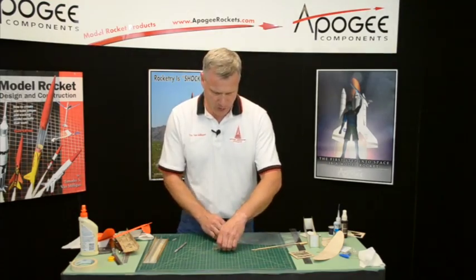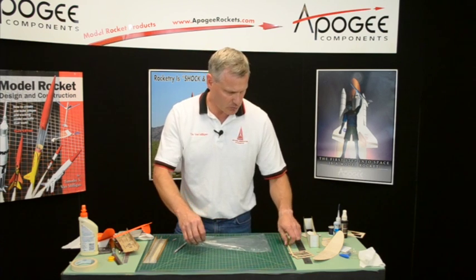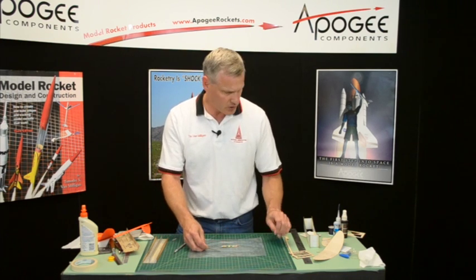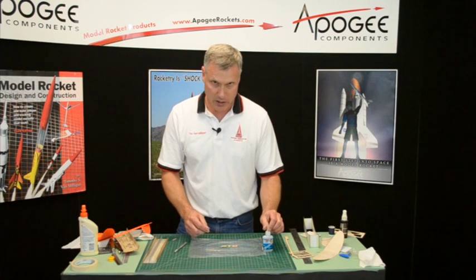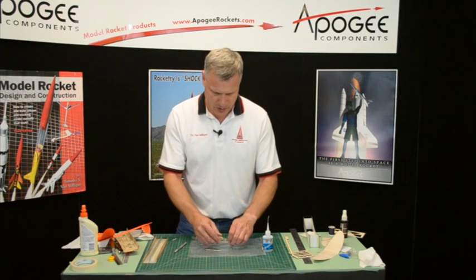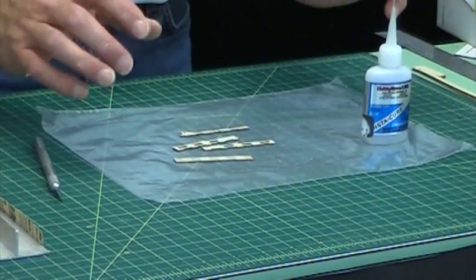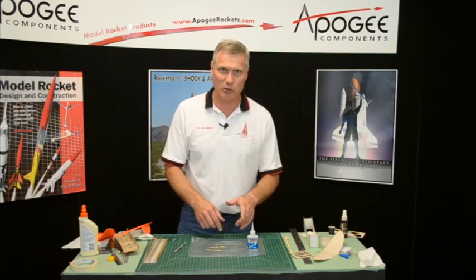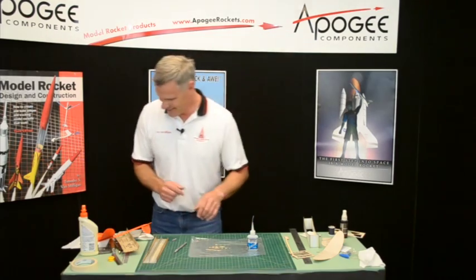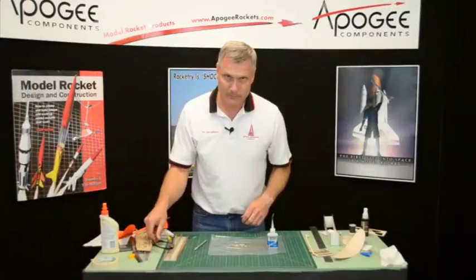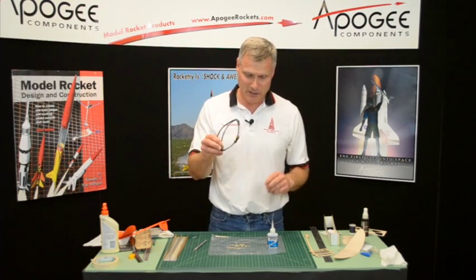So now I'm going to cover my work table with a piece of plastic because this is where we're going to use superglue, and I forgot my safety glasses. Whenever we use superglue we need to be using safety glasses. So I'm going to pause here, I'm going to go get my safety glasses and I'll be right back. Okay, I got my safety glasses.